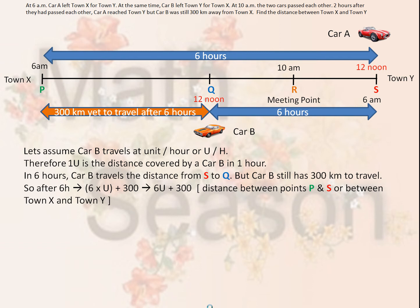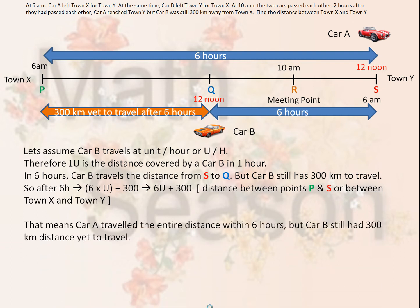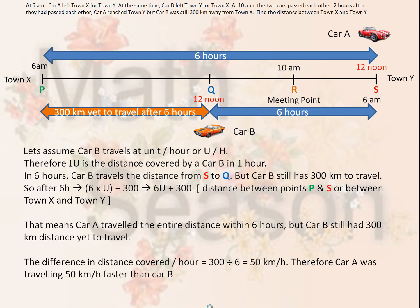So after 6 hours, 6U plus 300 kilometers equals the distance between town X and town Y. That means car A traveled the entire distance within 6 hours, but car B still had 300 kilometers to travel. So the difference in distance covered per hour is equal to 300 divided by 6, or 50 kilometers per hour. Therefore, car A was traveling 50 kilometers per hour faster than car B.